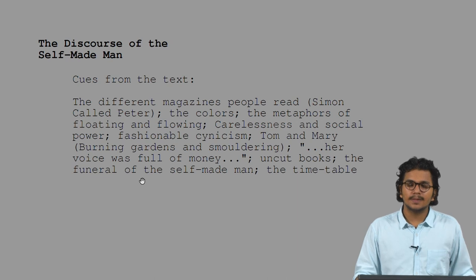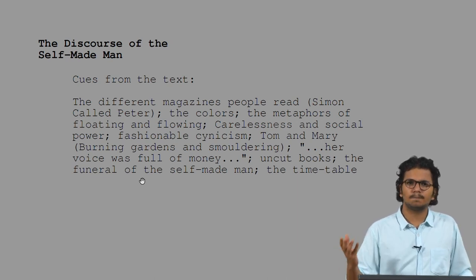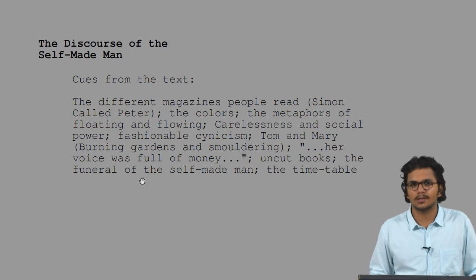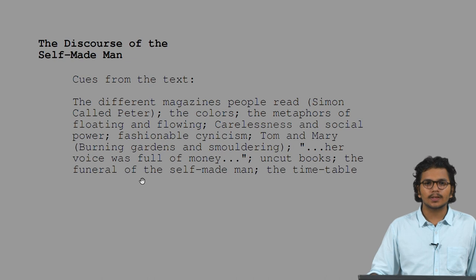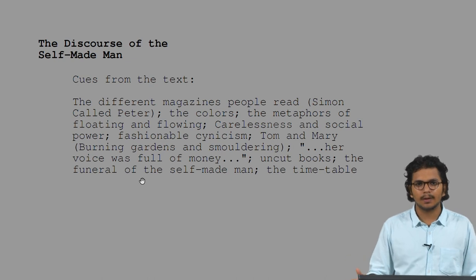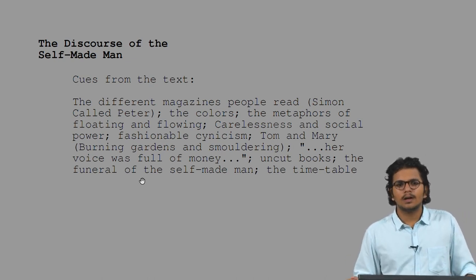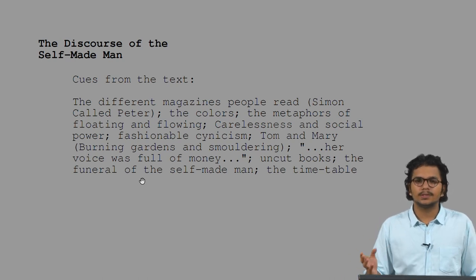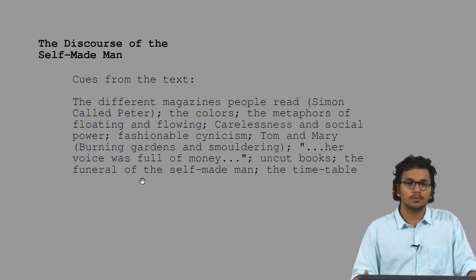Gatsby is always shown in such flamboyant colours — pink, yellow, and so on — while Tom's attire is in very neutral, calm, and composed colours. This is one of those metaphors which frequently pop up in the text. And there are also the metaphors of floating and flowing.